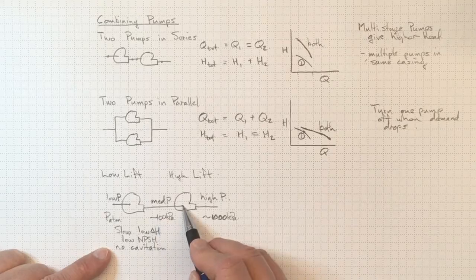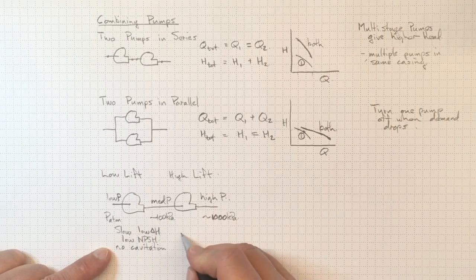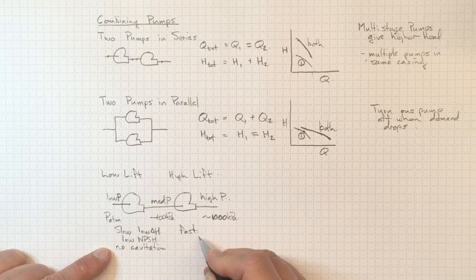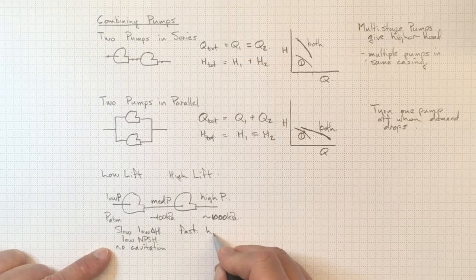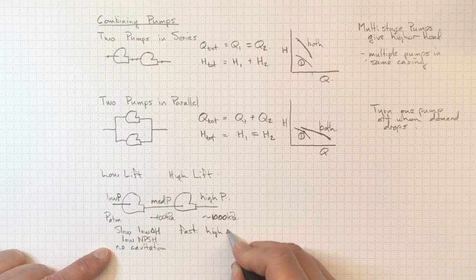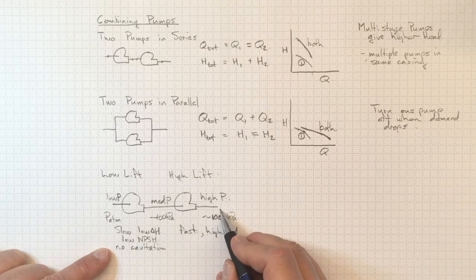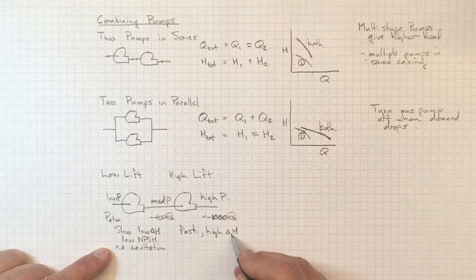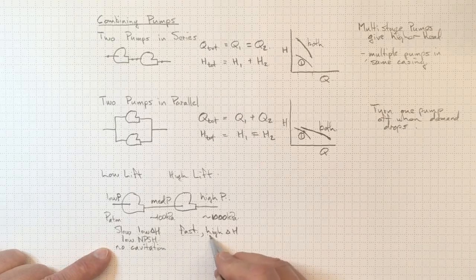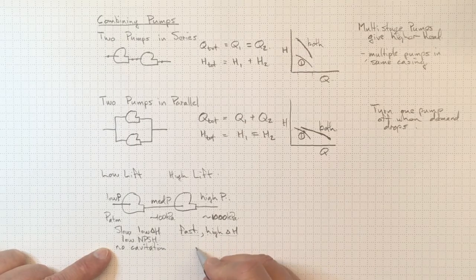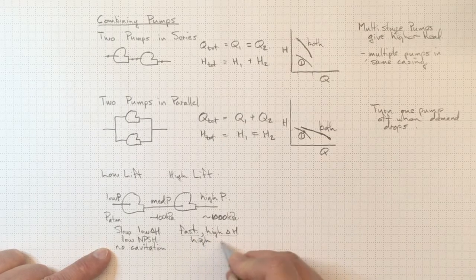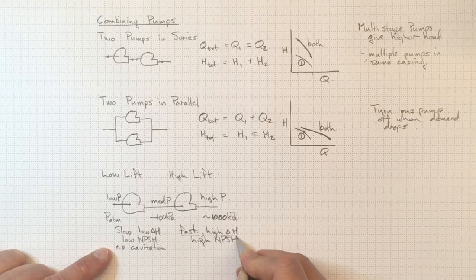But now we've got a higher pressure. We can have this high lift pump run really quickly. We've got a nice fast pump. If it's fast, we're going to have a higher delta H. So we're going to get a higher pressure rise across this second pump. But because it's running quickly, because we've got this higher delta H, we're going to have a high NPSH requirement.